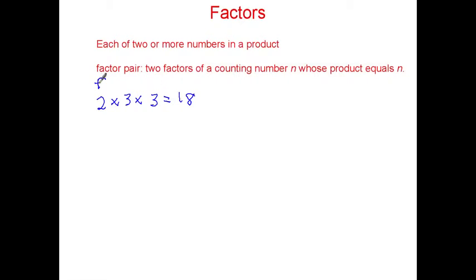We'd have 2 is a factor, 3 is a factor, this 3 is a factor, and 18 is the product. The numbers being multiplied together are the factors, the answer you get is the product.